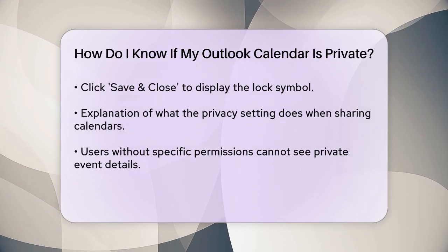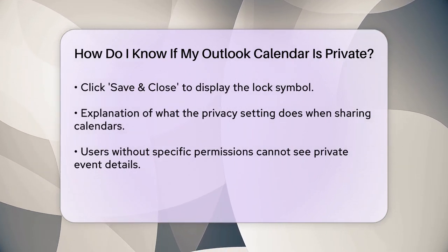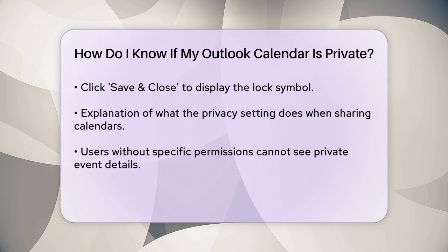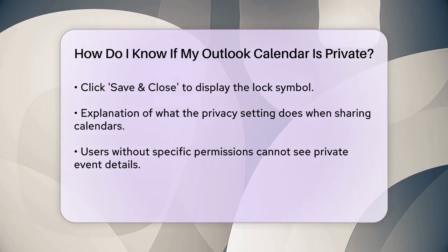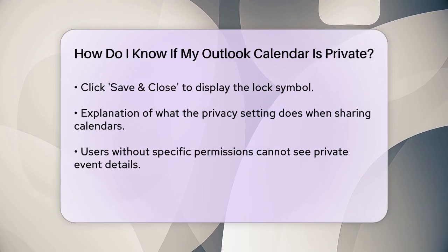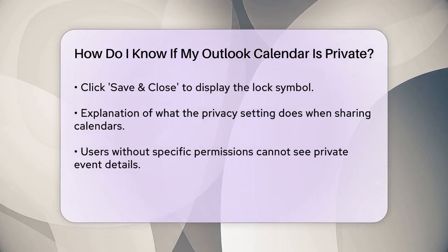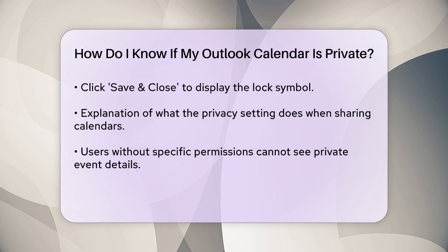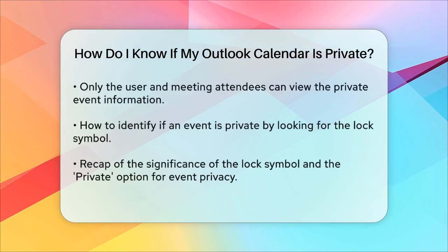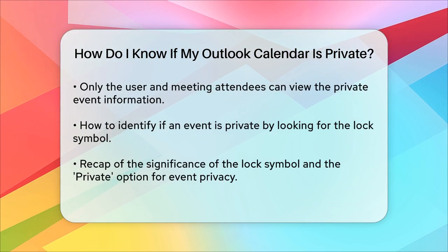Here's what this privacy setting does. When you share your calendar with others but mark an event as private, those users won't be able to see the details of that event unless you've granted them Delegate with Access to View Private Items permissions. This means only you and the attendees of the meeting will be able to see the details.